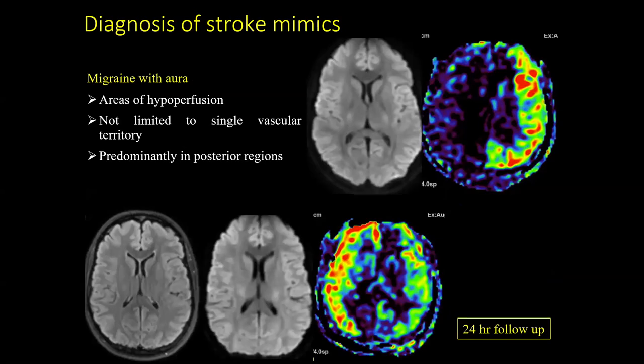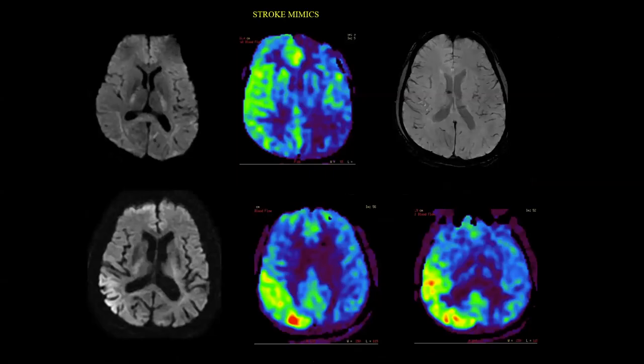Another example shows migraine with aura: a very large area of hypoperfusion not limited to a single vascular territory and predominantly posterior in distribution. On 24-hour follow-up images, there is complete restoration of perfusion. Many times we see Todd's paraparesis or postictal status where patients present with stroke-like symptoms, and ASL helps us to confidently diagnose these mimics.